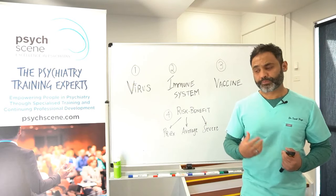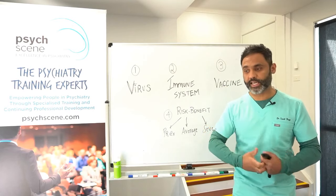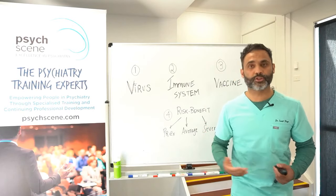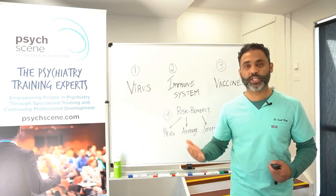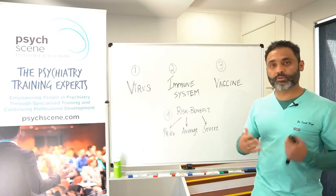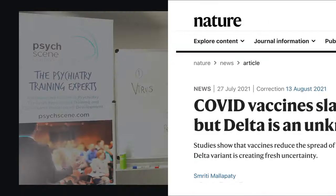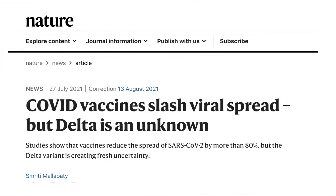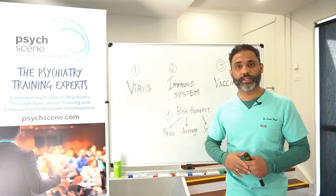What happens to the mRNA? It basically gets destroyed — it's like a Facebook story, an Instagram story, or a Snapchat message. It's gone. And from a utilitarian societal perspective, the vaccine also reduces the spread, which is another argument to take into account.